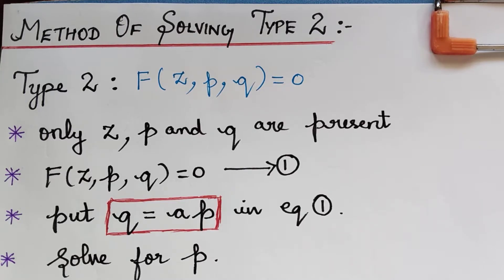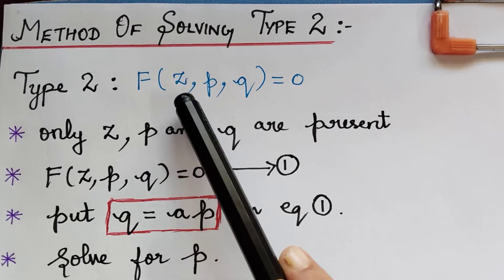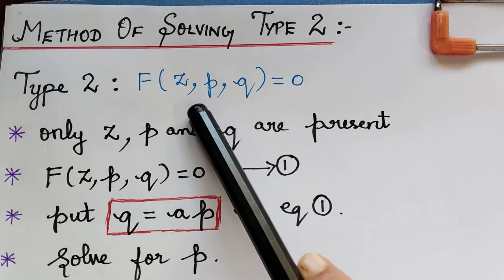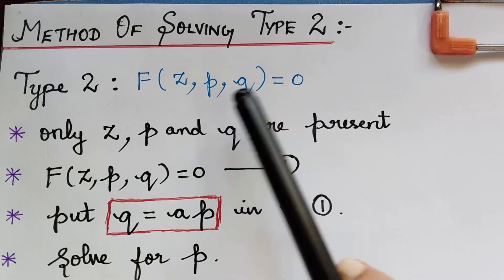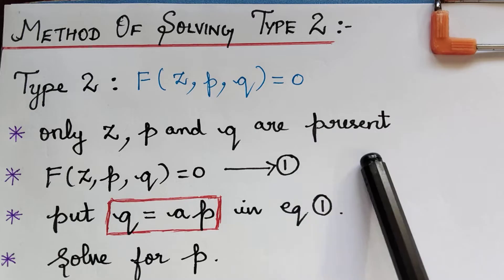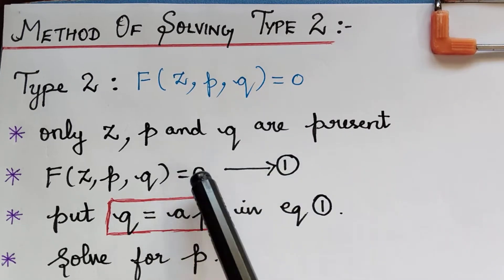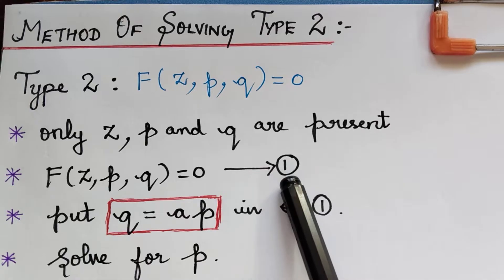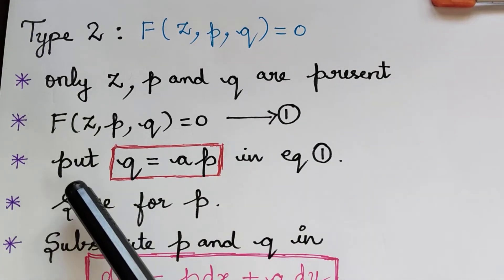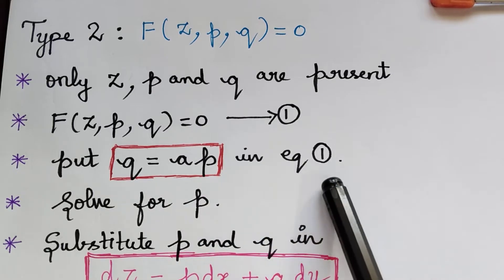So what is standard type 2? If the function involves only z, p, and q, then it is said to be of standard type 2. So only z, p, and q are present. What we have to do is first mark the given equation as equation 1, and then make a substitution by putting q equal to ap in equation 1.